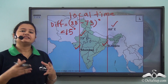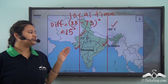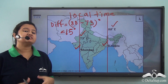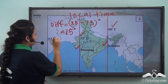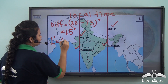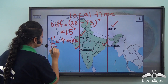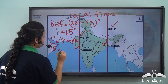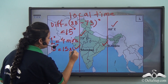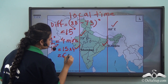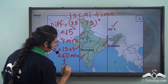So here we find that there is a difference of 15 degrees of longitude between these two places. Now what is the time difference between them? We know that 1 degree is equal to 4 minutes. So 15 degrees equals 15 into 4, which is equal to 60 minutes or 1 hour.